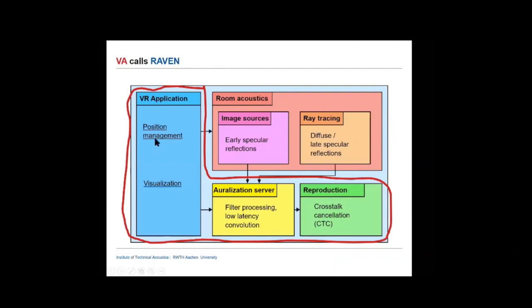VA is doing all the other things: position management, tracking, visualization — this is all part of the virtual reality application. The main core of VA is filter processing with low-latency convolution, and also sending the sounds to standardized hardware interfaces such as ASIO, JACK, or other formats. That can be very open for ambisonics, for binaural technology with headphones or with loudspeakers.